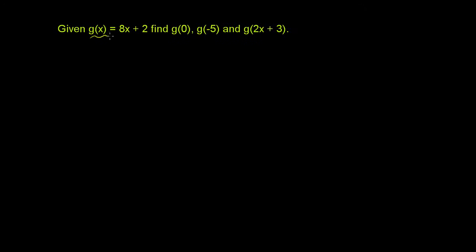Given g of x is equal to 8x plus 2, find g of 0, g of negative 5, and g of 2x plus 3. All this is — when they say g of x is equal to 8x plus 2, this is a function definition.